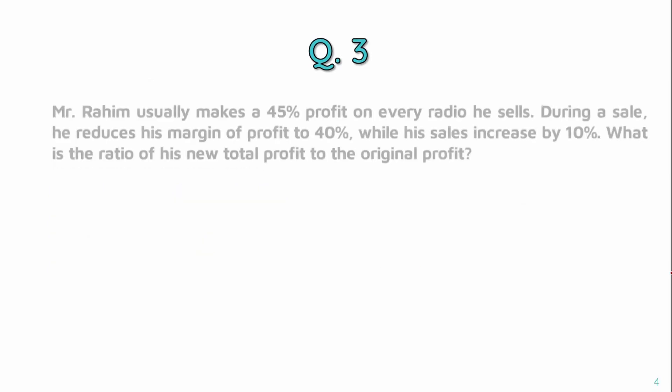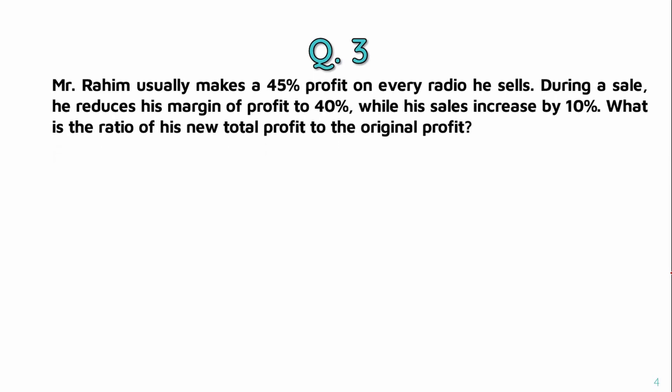Now let's go to question number 3. Mr. Rohim usually makes a 45% profit on every radio he sells. During a sale, he reduces his margin of profit to 40% while his sales increase by 10%. What is the ratio of his new total profit to the original profit?